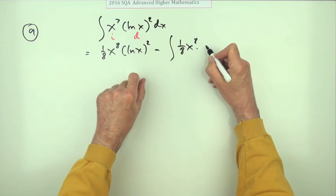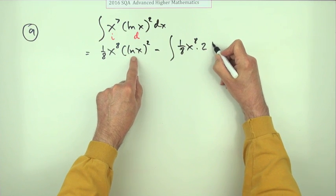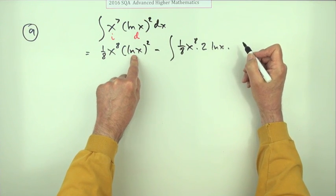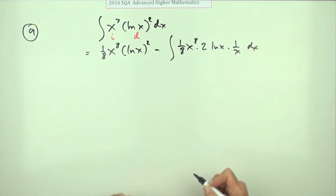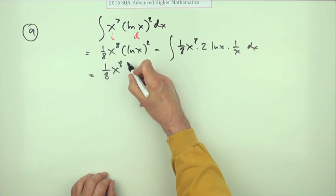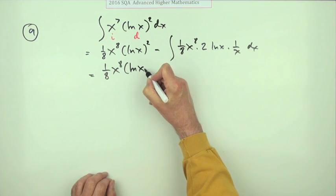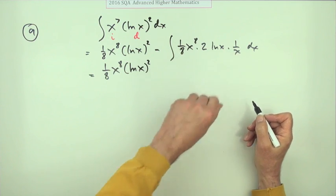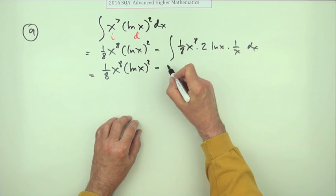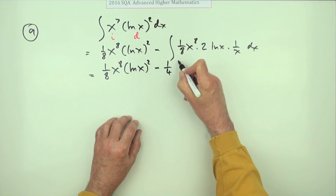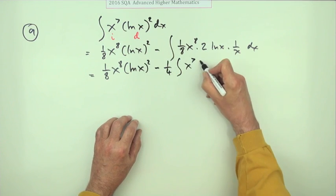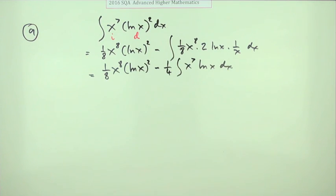Now, differentiating that function of a function would be two times the thing itself to power one, multiplied by the derivative of that inner function which is 1/x dx. Now I just need to tidy this lot up. So I've got 1/8 x^8 ln x squared. Two times 1/8 makes 1/4, so I can take that constant out. 1/4 of that x will knock that back down to a seven again, and I'm just left with ln x dx.